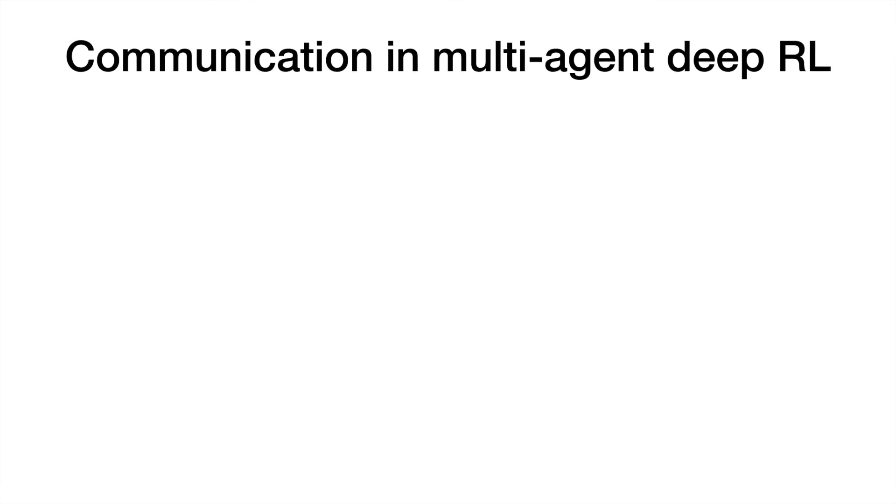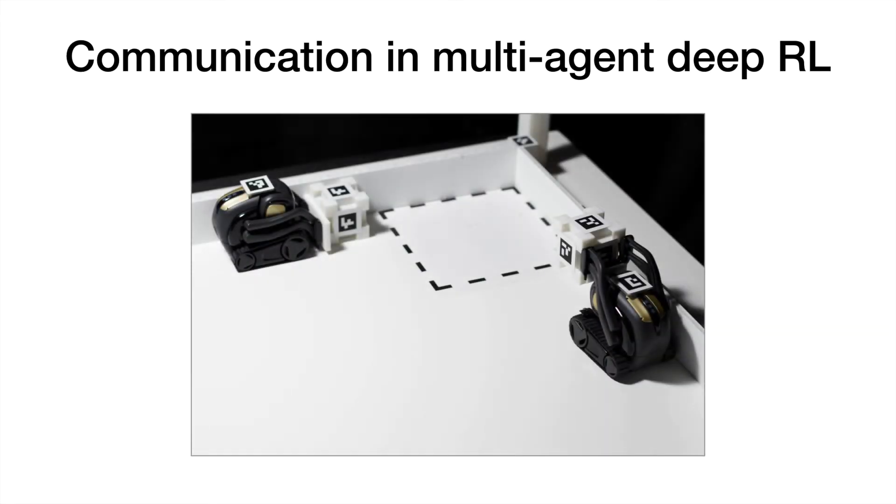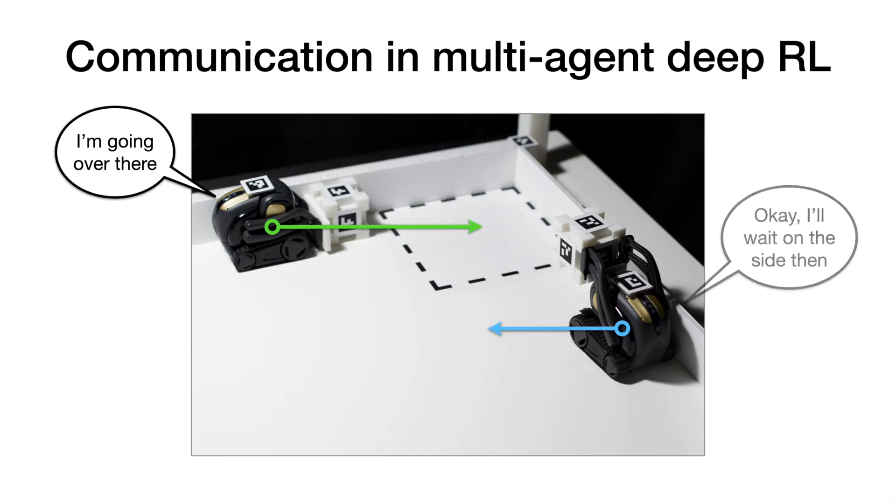When training reinforcement learning policies in multi-agent settings, it is important that agents are able to communicate their intentions to each other. Consider this scenario where two robots are each headed towards the same destination. If they communicate with each other, then they can coordinate to avoid a potential collision.